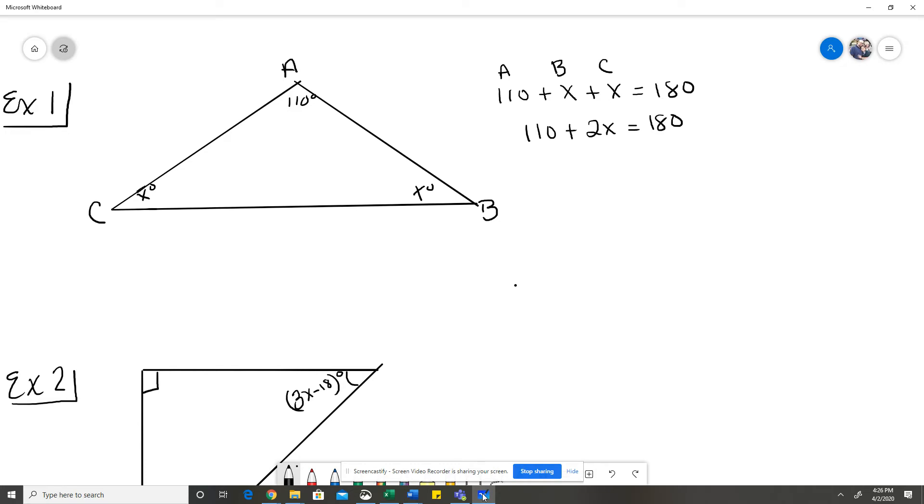At this point we're just solving an equation. So when I take away the 110, then I know 2X equals 70, and I'm going to divide that by two. And I find out that each of my two base angles here are equal to 35 degrees.